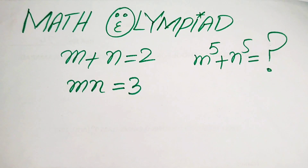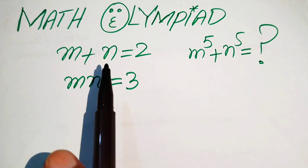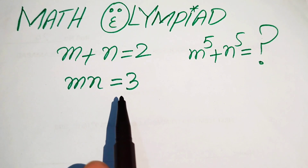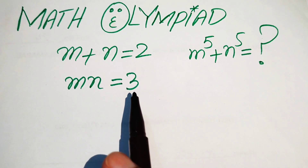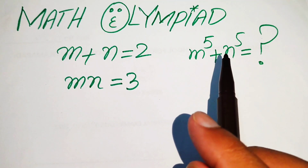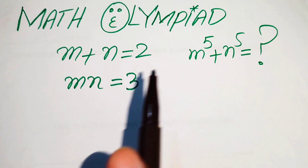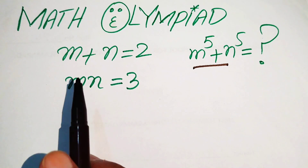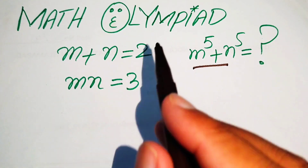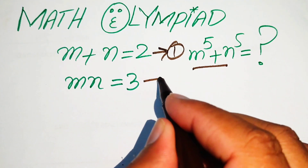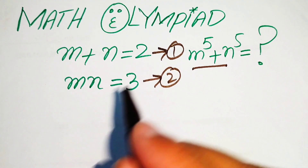Hello everyone, welcome. We solve this math olympiad algebra problem. Here we have m plus n equals 2 and m times n equals 3, and we solve for the value of m to the power of 5 plus n to the power of 5. We focus on these two equations and call them equation number 1 and equation number 2.